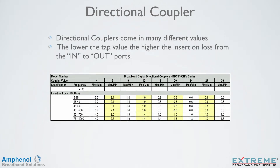Directional couplers come in many different values. The lower the tap value, the higher the insertion loss from the in to the out ports. Here's a specification sheet for our broadband digital directional couplers. Looking at the 4 value, the insertion loss ranges from 3.7 dB at 5 MHz to 4 dB at 1 GHz. On the 30 value directional coupler, the insertion loss ranges from 0.6 dB to 1.3 dB. So you can see that the lower the value, the higher the insertion loss, and the higher the value, the lower the insertion loss.